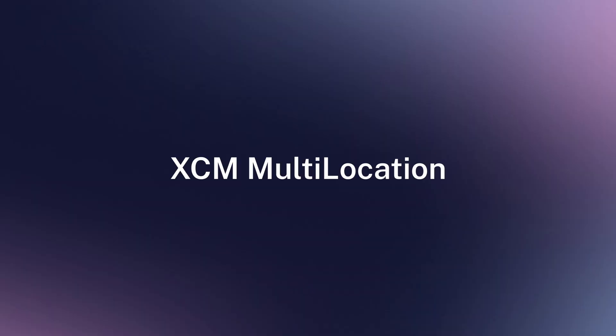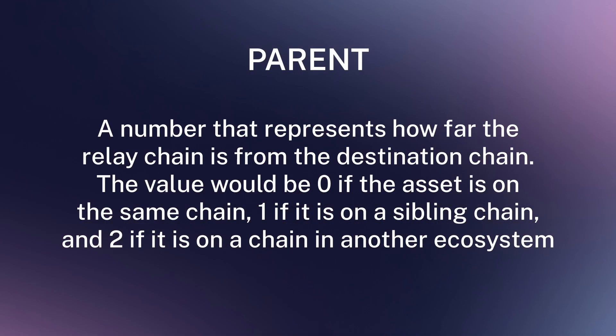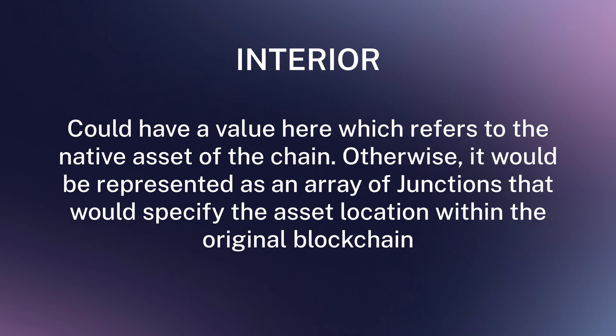Now let's continue with XEM multi-location. An XEM multi-location is a format in which foreign assets identify a universal location. It consists of two parts: parent and interior. Parent is a number that represents how far the relay chain is from the destination chain — the value would be zero if the asset is on the same chain, one if it is on a sibling chain, and two if it is on a chain that is in another ecosystem. Interior could have a value of 'here' which refers to the native asset of the chain, otherwise it would be represented as an array of junctions that specify the asset location within the original blockchain.